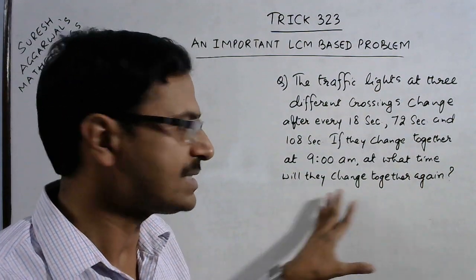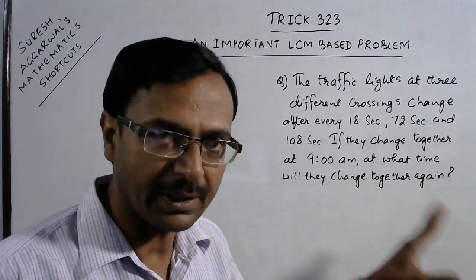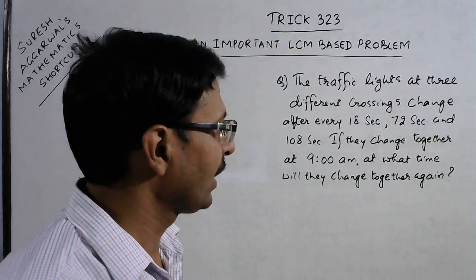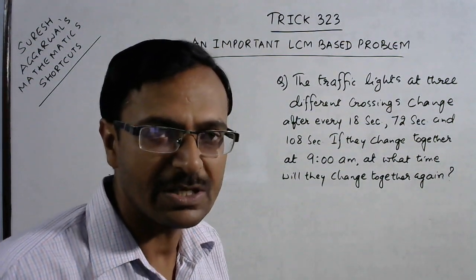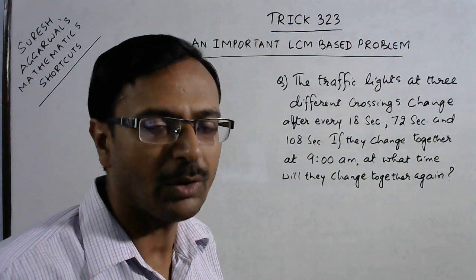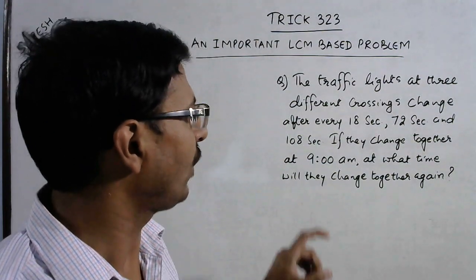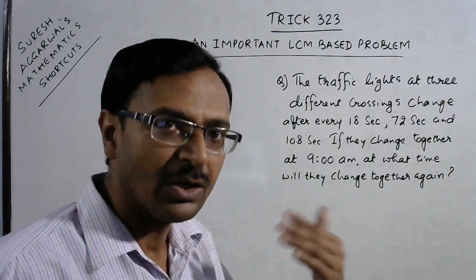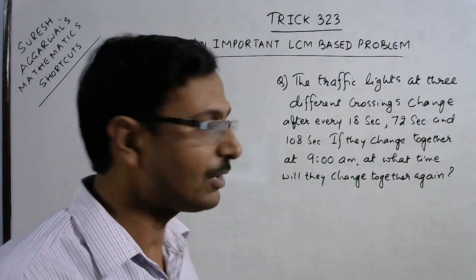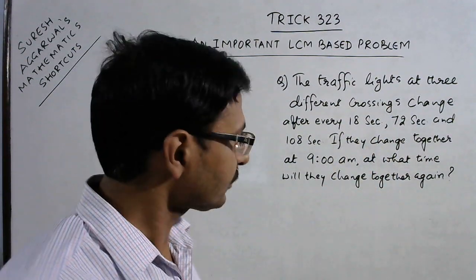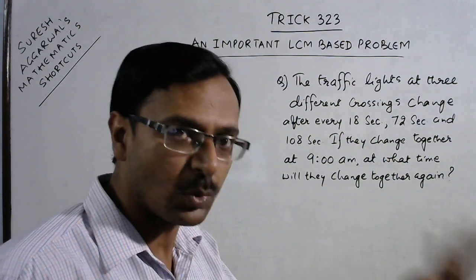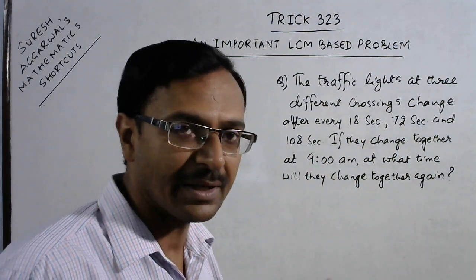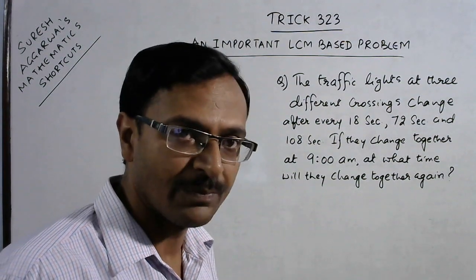A very important question. You must first identify that the question is based on finding LCM of the numbers. Obviously, 18, 72, and 108 seconds they are taking to change, so your answer will be greater than these three numbers because they will be changing in subsequent time. Whenever your answer is greater than the given numbers, then the concept of LCM is to be used.